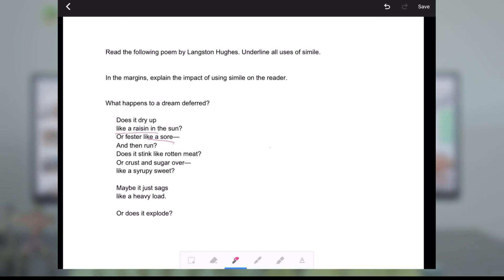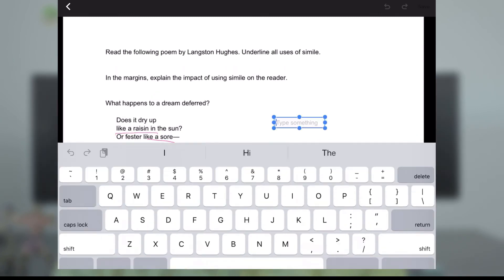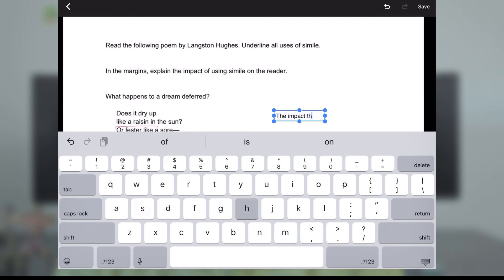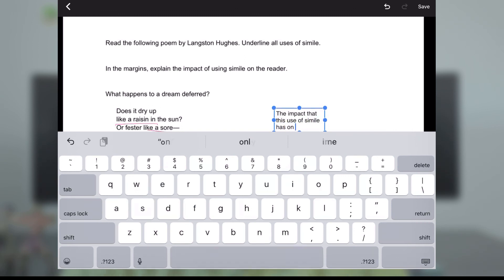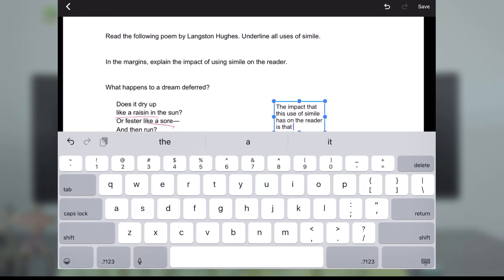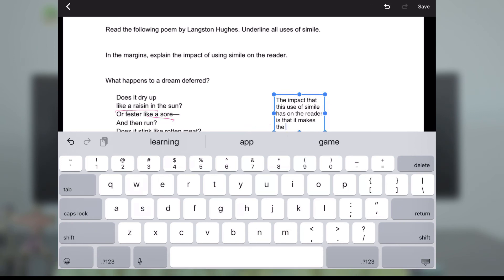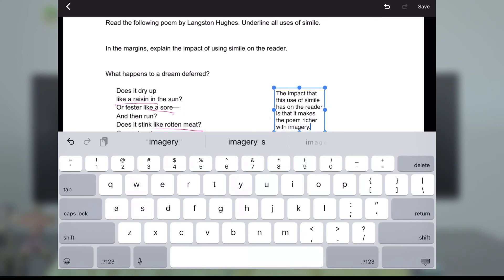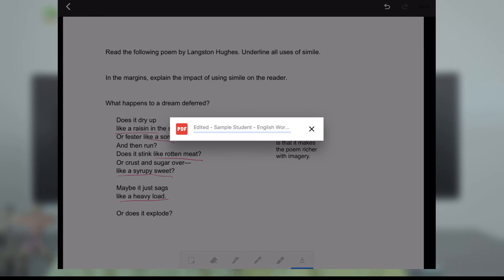Like a sore. Like rotten meat. Like a syrupy sweet. Like a heavy load. Okay, so I think I got all the use of simile. And then the margin, I have to explain the impact. So this time, instead of writing by hand, I'm going to go to this A. I'm going to go here. And I'm going to start typing. That the impact that this use of simile has on the reader is that it makes the poem richer with imagery. And then I'll hit save. Once again, it's going to save the PDF version.